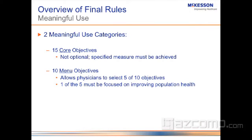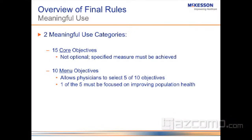There are two key pieces for Meaningful Use: core measurements and quality measurements. In Meaningful Use, there are 15 core objectives which must be done — the core means they're mandated. There are also 10 menu objectives, and out of the menu, you only have to choose 5 of the 10 in order to qualify.